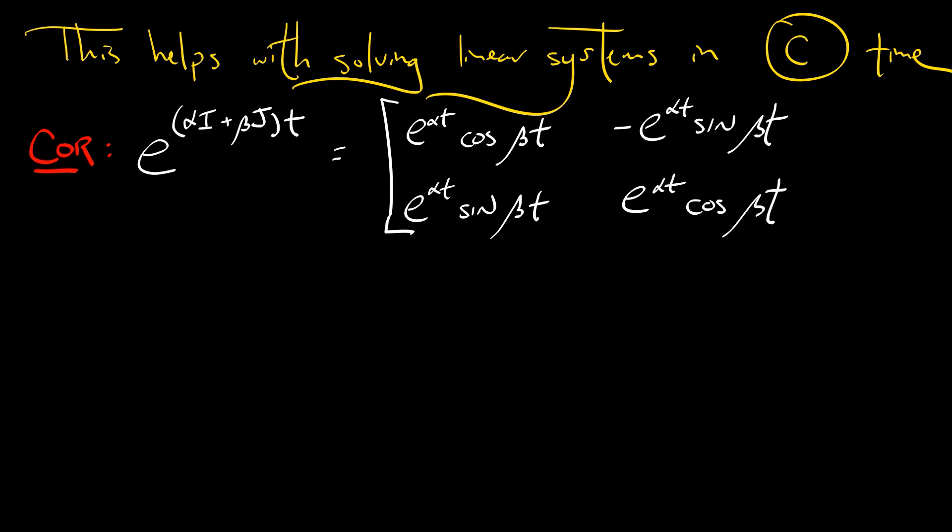Now, that's a mouthful, but the proof is straight out of Euler. If I want to exponentiate alpha I plus beta J times T, I can split that up into the product of e to the alpha T I and e to the beta T J.